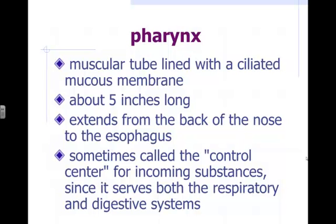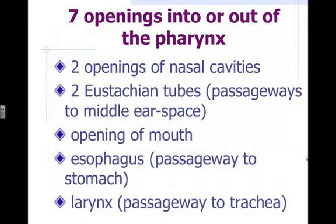There are seven openings into or out of the pharynx. Two of them are the nasal cavities we just talked about. Two are small tubes called eustachian tubes — little passages from the pharynx up to the middle ear. They're normally closed, but they serve the purpose of equalizing air pressure.